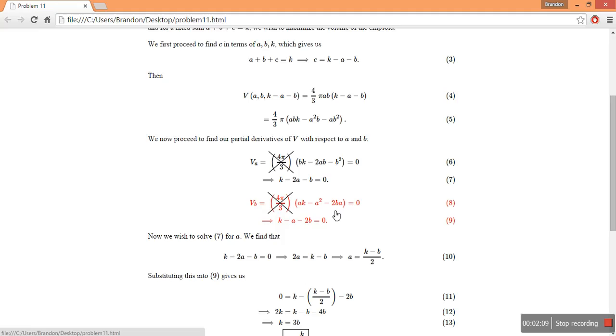And for the second one, ak minus a squared minus 2ba. And I've crossed out the 4 pi on 3 because it's just a constant that's acting on all three of our terms. And so it's really unnecessary.